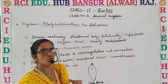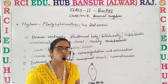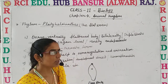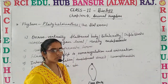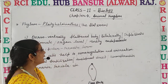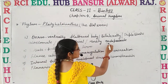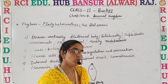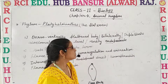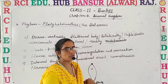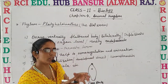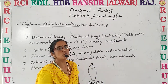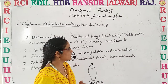This thin body type which is dorsoventrally flattened is very important for them because their mode of nutrition is mostly endoparasitic, though some of them are ectoparasites also. Endoparasite means organisms living inside the body of another living organism for their nutrition.